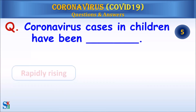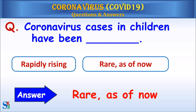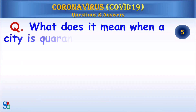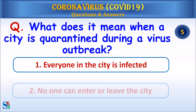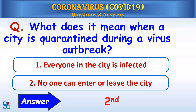Coronavirus cases in children have been rapidly rising or rare as of now. Question: What does it mean when a city is quarantined during a virus outbreak? One — everyone in the city is infected, or two — no one can enter or leave the city? Answer: The second — no one can enter or leave the city.